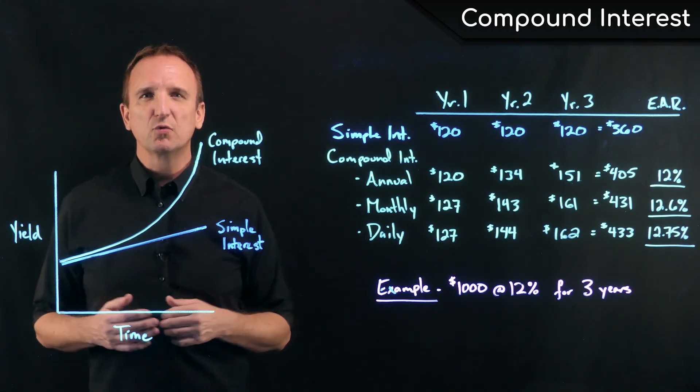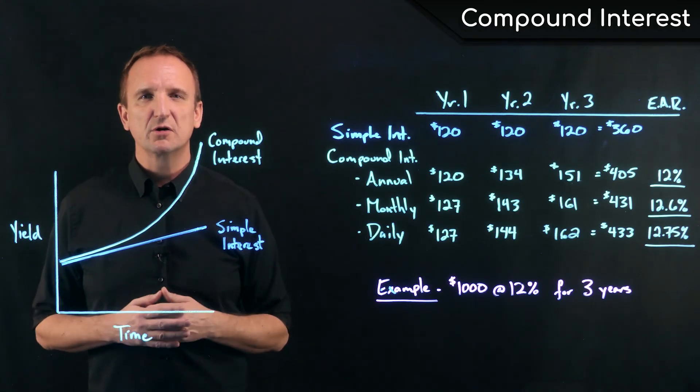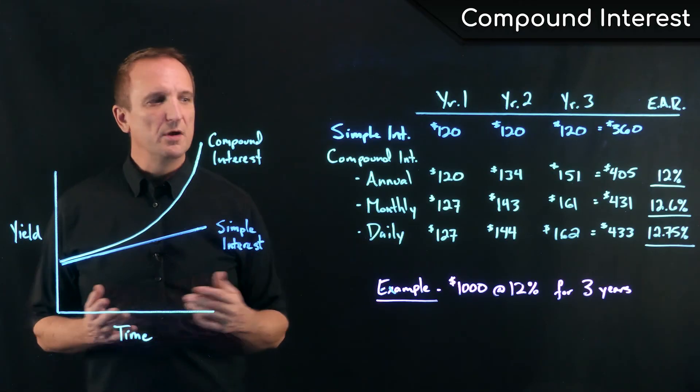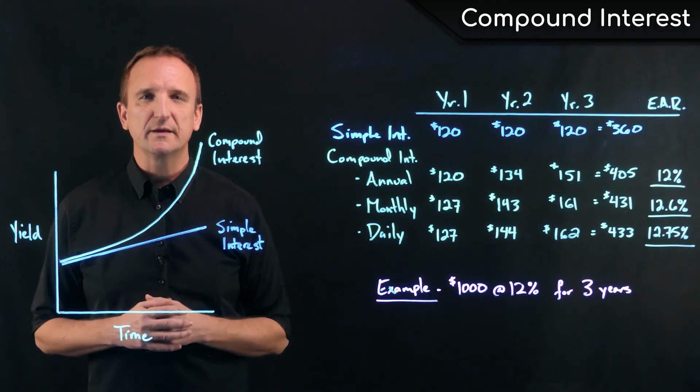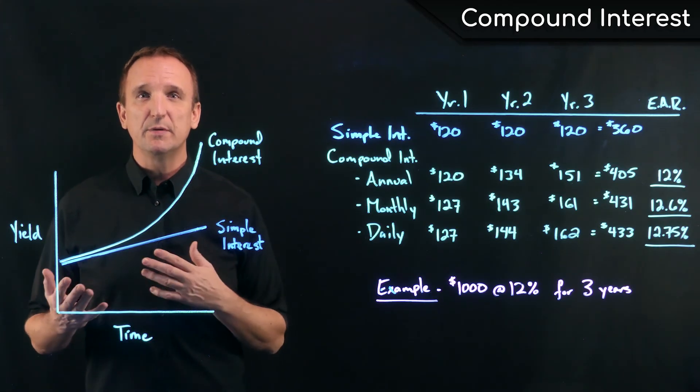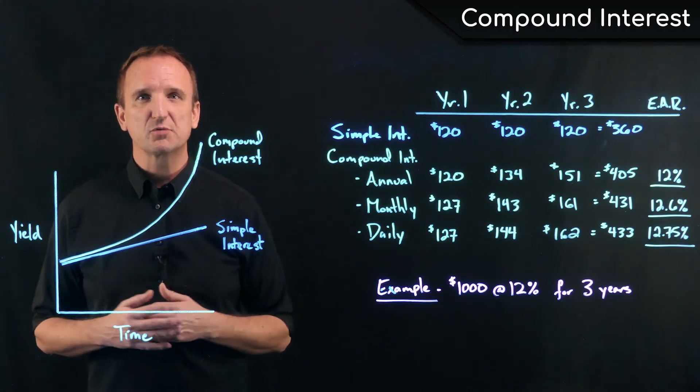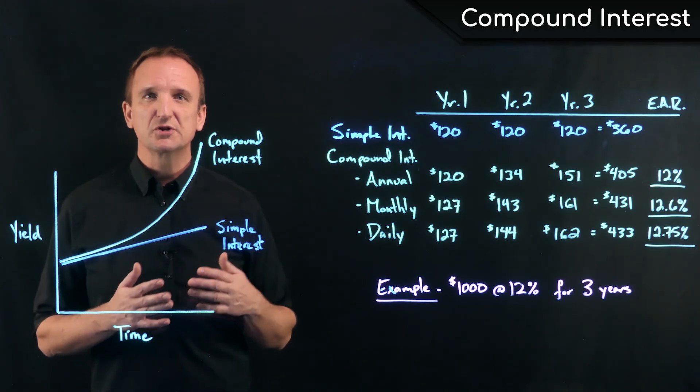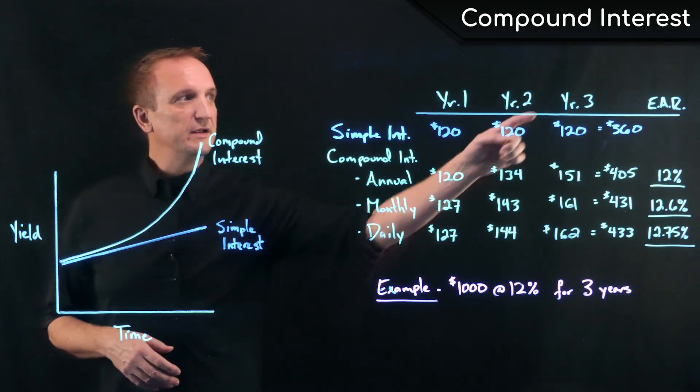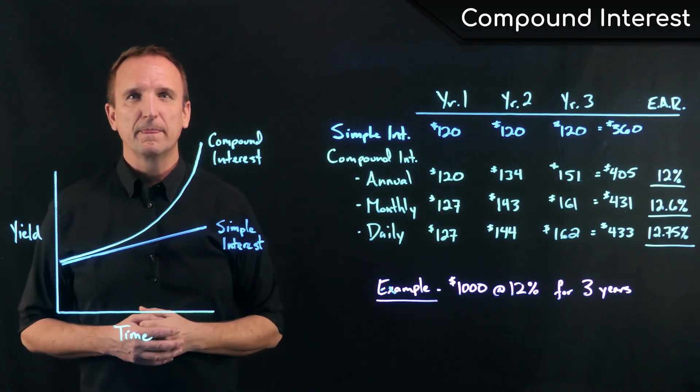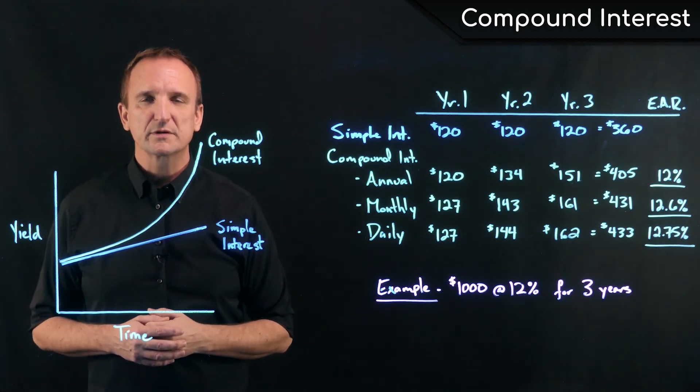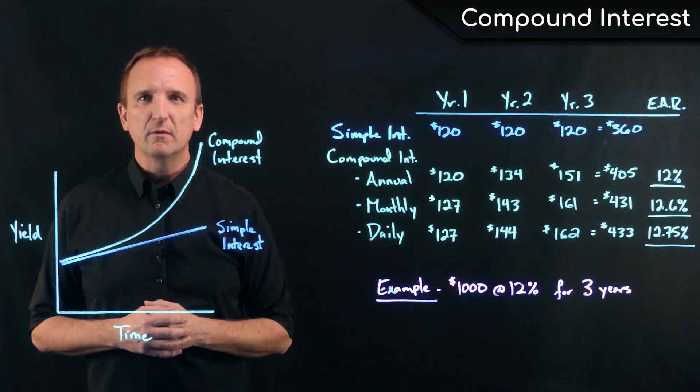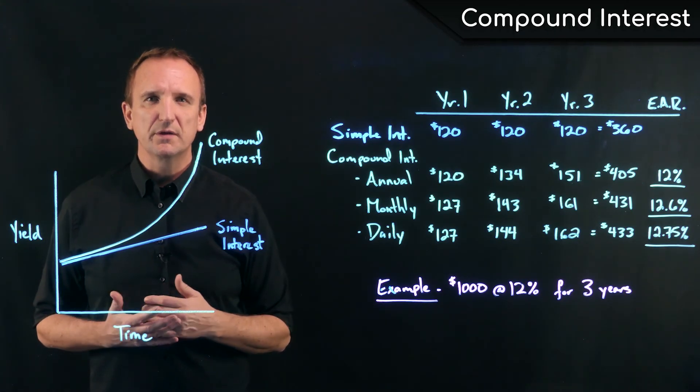Effective annual rate is also known as annual percentage yield. The nominal rate, the stated rate or named rate, which is 12% in this case, is the APR or the annual percentage rate. The annual percentage yield refers to the effective annual rate that is based on the number of compounding intervals. Typically in real estate, almost everything we do is monthly compounding.